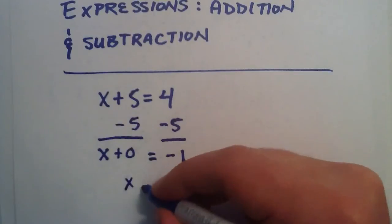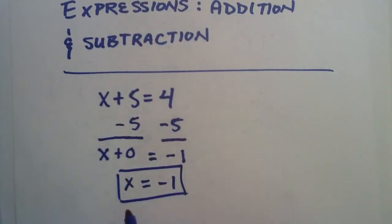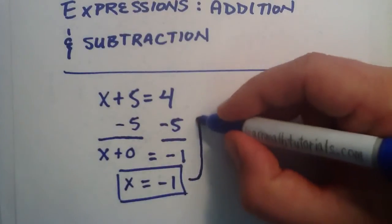x plus 0 gives us negative 1. Or simply, x equals negative 1. So, that is our solution. This is the value that x has to be in order for this statement to be true. So, let's check that that's the case.